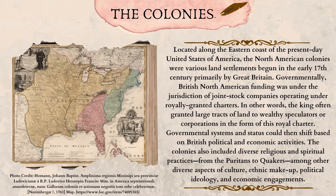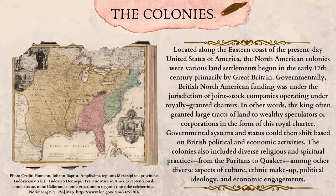The Colonies. Located along the eastern coast of the present-day United States of America, the North American colonies were various land settlements begun in the early 17th century, primarily by Great Britain. Governmentally, British North American funding was under the jurisdiction of joint stock companies operating under royally granted charters — the king often granted large tracts of land to wealthy speculators or corporations in the form of a royal charter. Governmental systems and status could then shift based on British political and economic activities. The colonies also included diverse religious and spiritual practices, from the Puritans to Quakers, among other diverse aspects of culture, ethnic makeup, political ideology, and economic engagements.